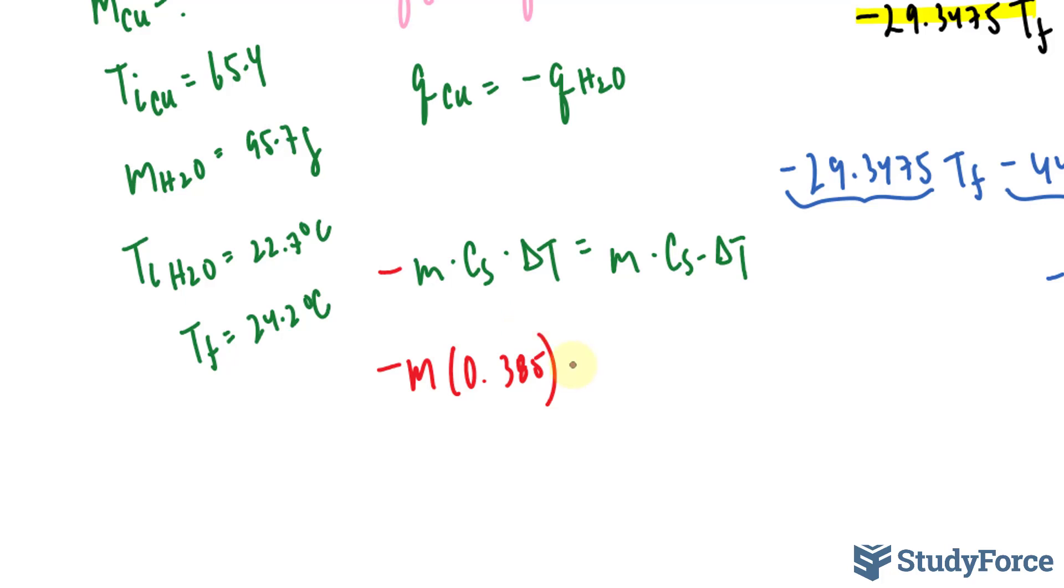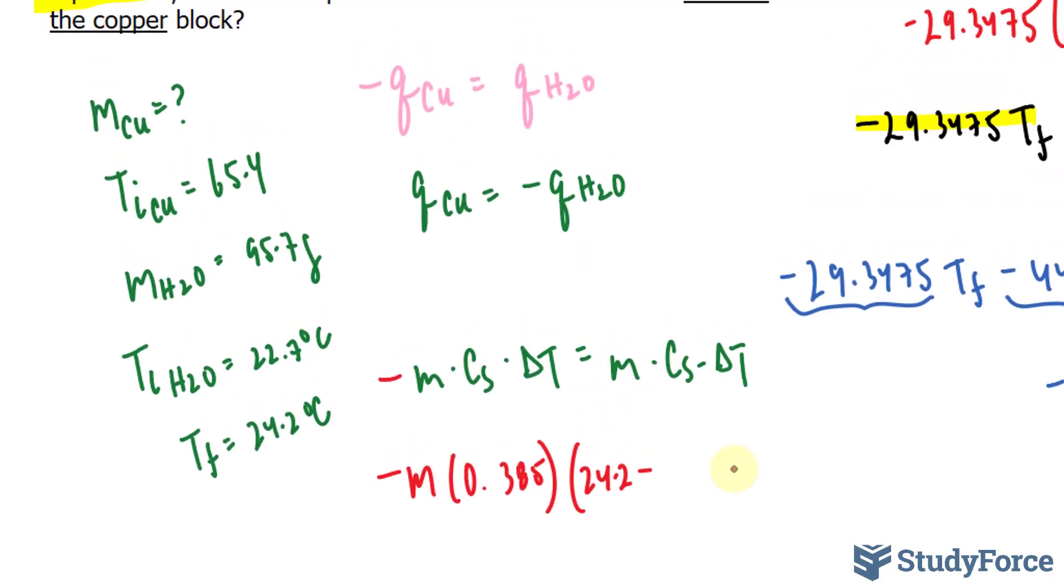According to the table I have accessible to me, the specific heat capacity of copper is 0.385. Delta T is easy to find. We have the final, which is 24.2 minus the initial, which was 65.4. The mass of water is 95.7. And the specific heat capacity of water, according to this table, is 4.18.